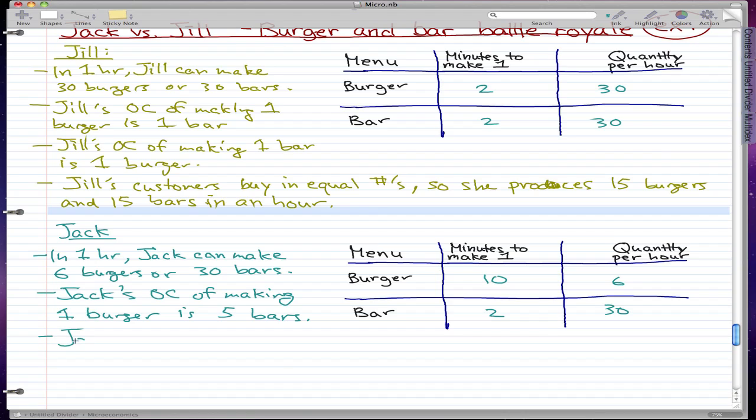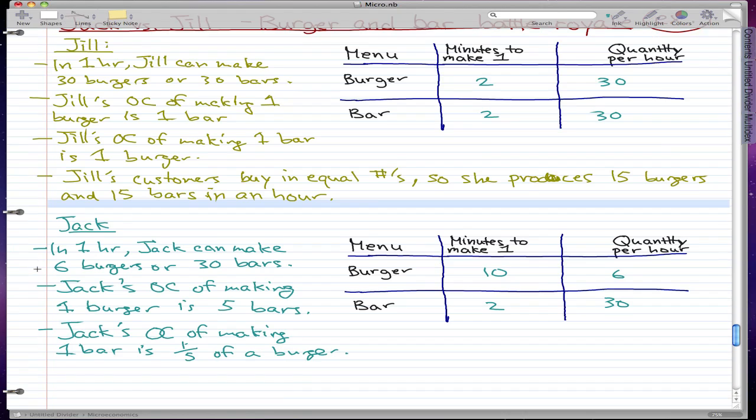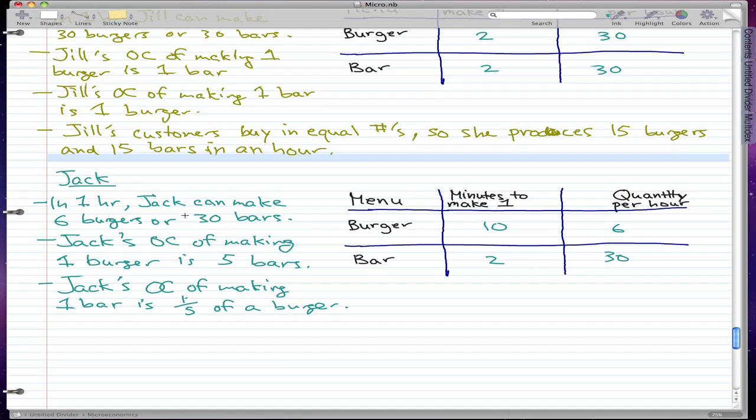To make one burger it will cost Jack 5 bars. But Jack's opportunity cost of making one bar is one-fifth of a burger, because remember this is what the opportunity cost is: it's what we give up over what we get.